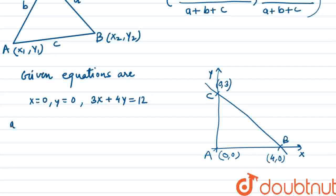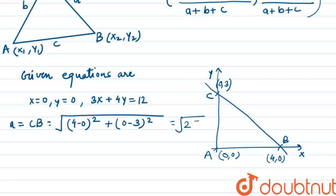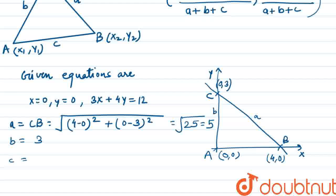Now we can see that the value of small a equals CB, which equals the square root of (4 - 0)² + (0 - 3)², which equals the square root of 25, which equals 5. The value of b will be 3, because 3 units is up to the y-axis. So the value of b is 3.